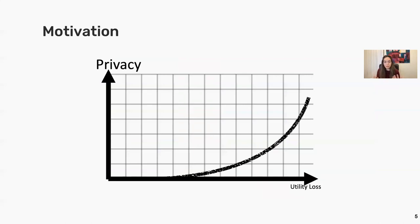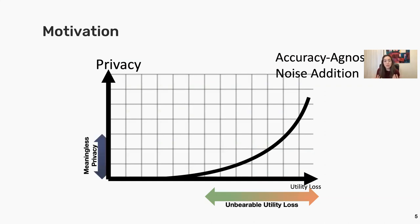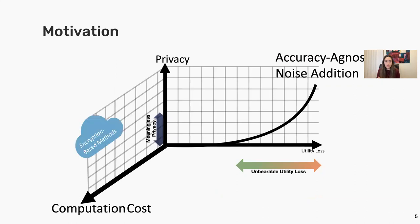If you want to protect the privacy of these queries, one way is to add some random accuracy-agnostic noise. The problem is that in order to get any meaningful privacy, you need to add a whole lot of noise, which is going to cause a lot of loss in utility. Another way is to use encryption-based methods that can offer you security with very little loss in utility, but the problem is that they are very computationally intensive, so they're going to cost a lot in terms of runtime.